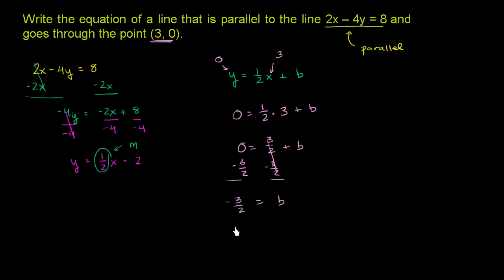So we have the equation for our line that is now parallel to this equation and goes to the point (3, 0). It is y equals, it has the same slope as this guy up here, 1 half x. And now we know its y-intercept, minus 3 halves. And we are done.